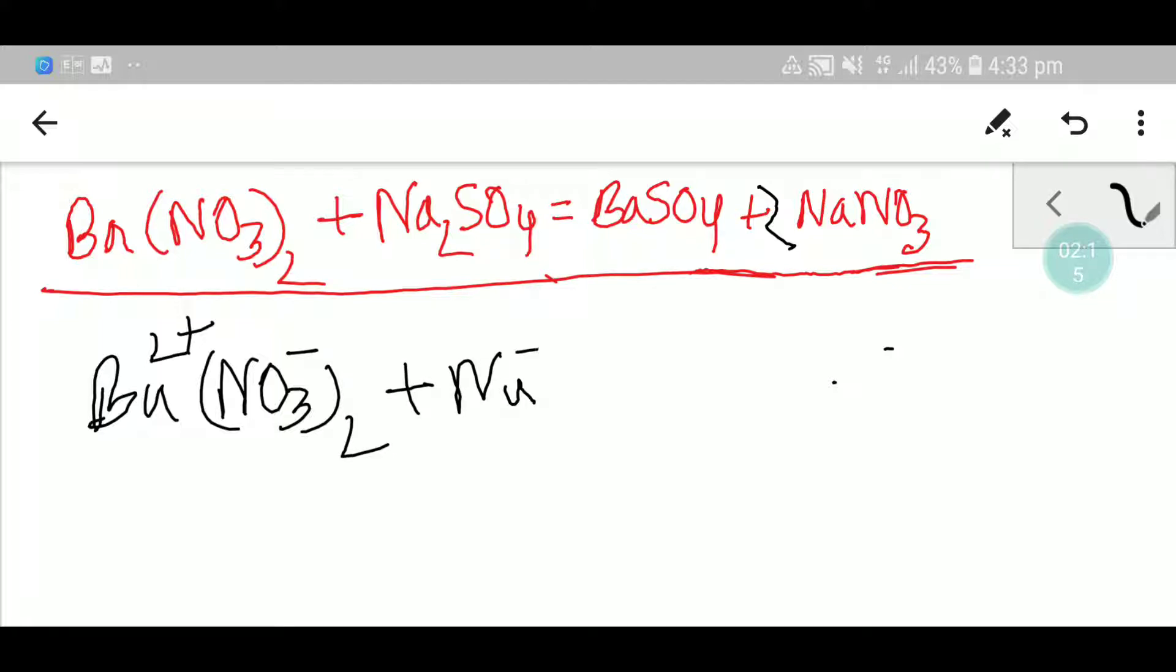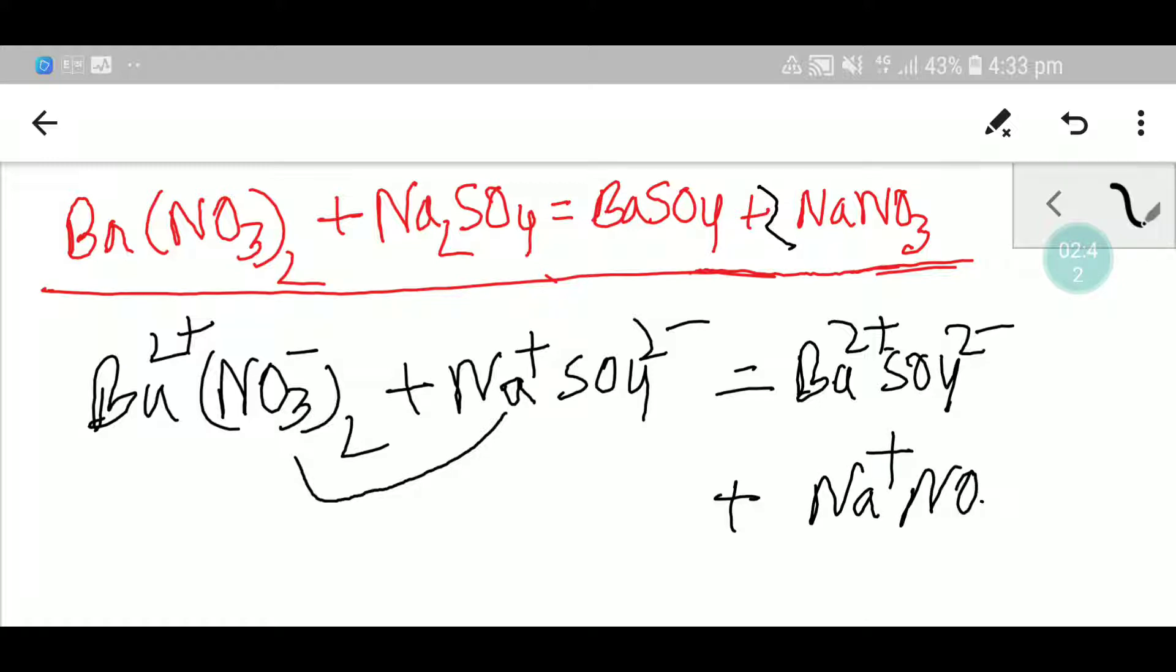And you know that sodium one plus and sulfate is two minus. To balance what can you do. This positive charge will go with this negative. So you are getting here barium sulfate. And this sodium positive charge will go with this negative. So you will get sodium plus nitrate.